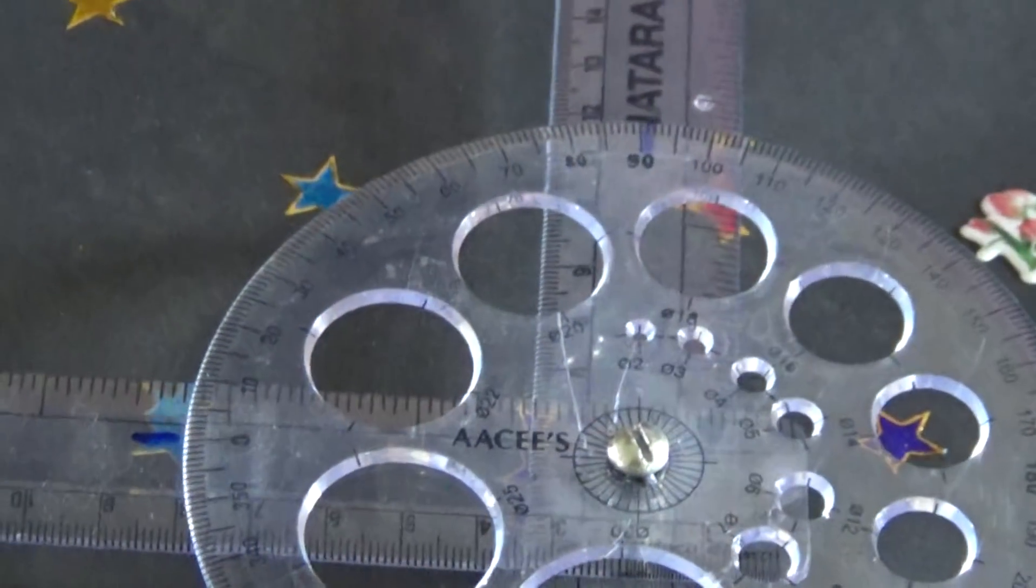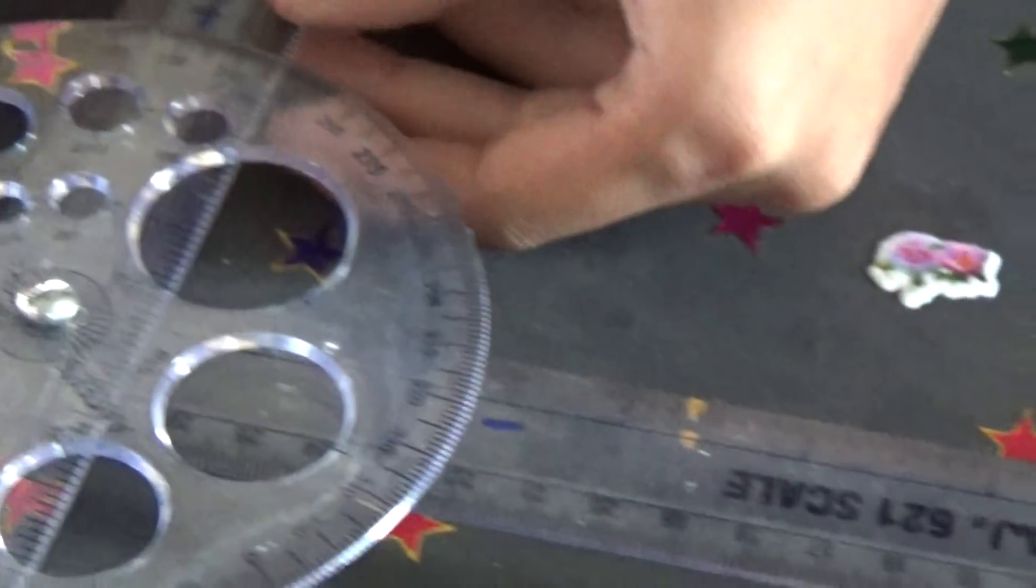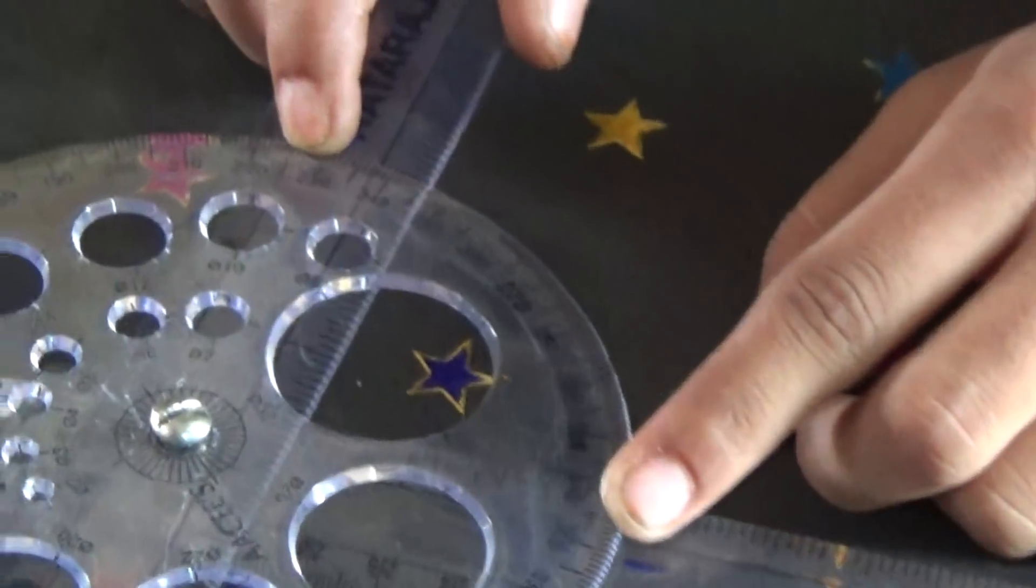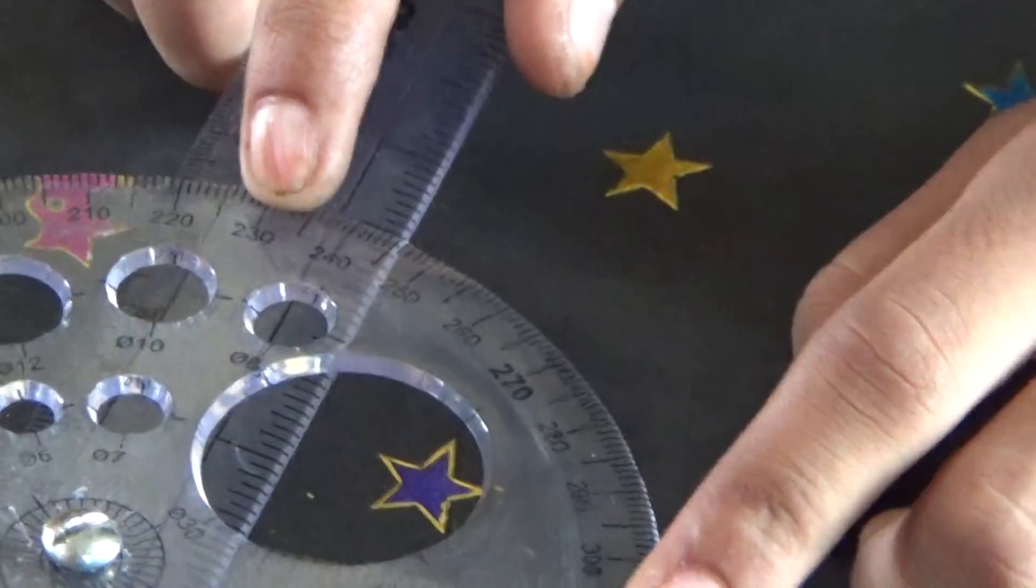And here you can observe by other way also. Here is 230 and here is 320. 320 minus 230 is equal to 90 degrees.